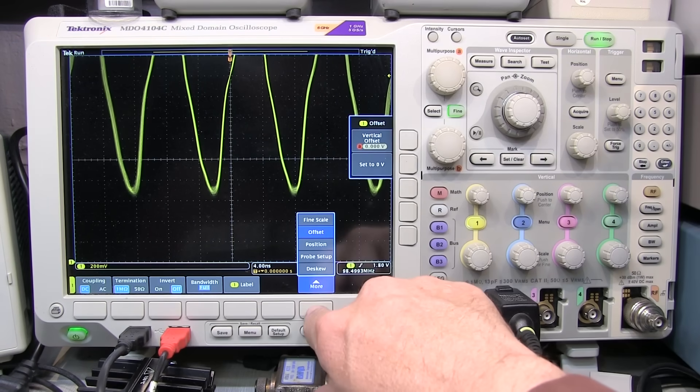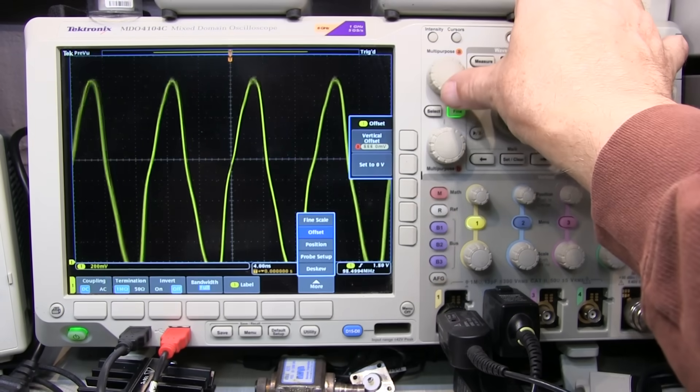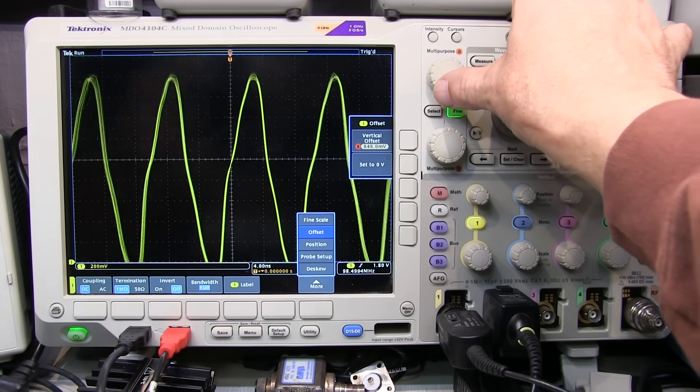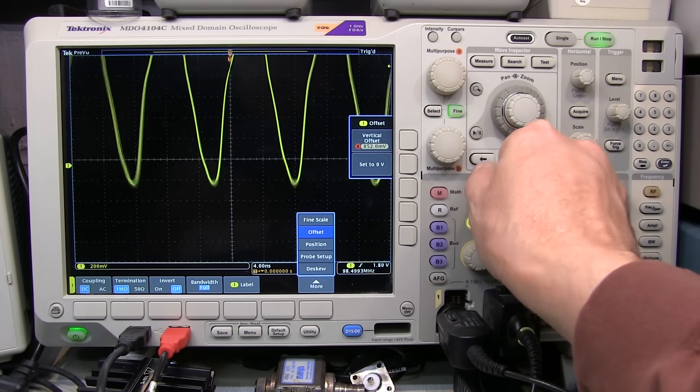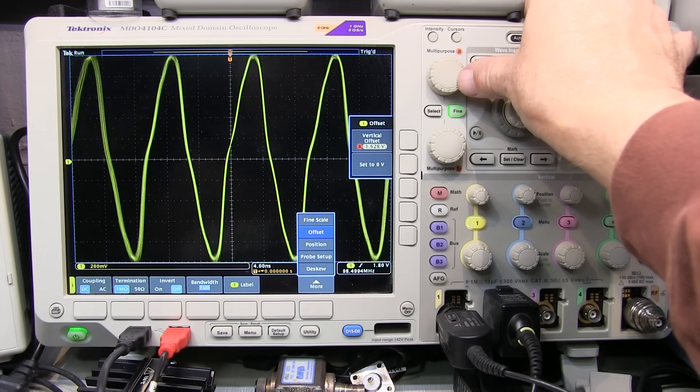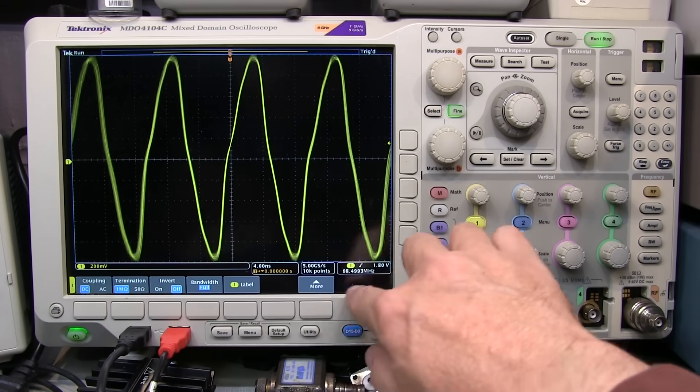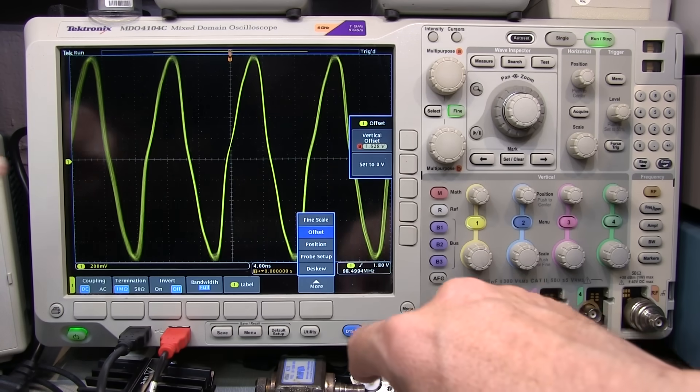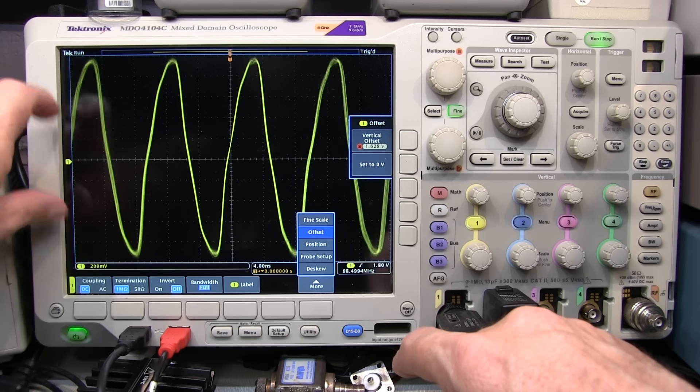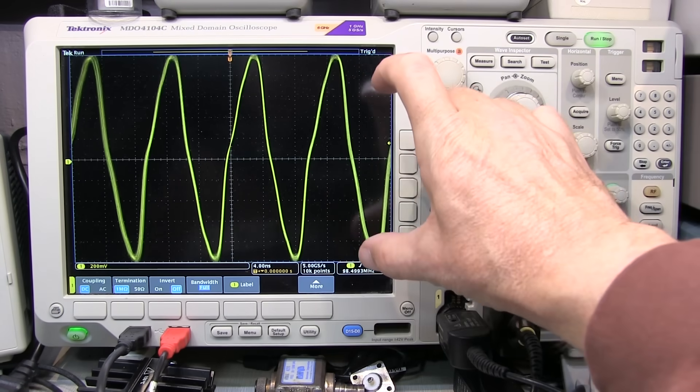This is where you want to take advantage of a feature called offset. So on this particular scope, under the More menu, we can go to offset. And I can dial in an offset value. And what that does is it repositions where my reference point is. So instead of the reference point being at ground, the reference point is now going to be at whatever that vertical offset value is. So for example, if I put that near the center of the screen and adjust my offset value down, I can get that signal to essentially now occupy full scale on the screen, in this case 200 millivolts per division, by having an offset value of about 1.6 volts. So the offset value allows you to now shift the vertical expansion point of your vertical scaling to help you position your waveform within the full scale range of the ADC.